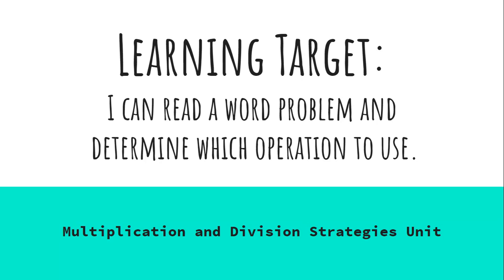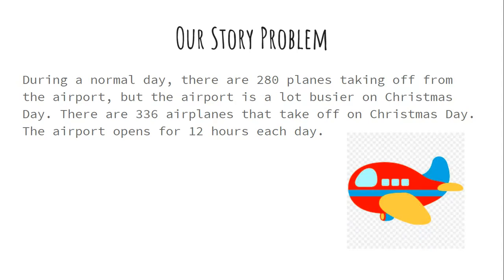Just like when we read stories in books, we have to comprehend what the story is about. We will read it three times, because good readers reread stories to make sense of them. We're going to use a strategy called the three-read strategy, which means exactly what it says — we're going to read it three times.